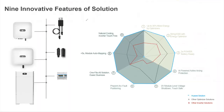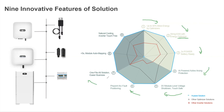As a review of all the things we discussed, we have nine main features: up to 40% more energy by using optimizers; the string energy storage system with optimizers; the two times the power battery-ready feature; artificial intelligence powered active arcing protection; zero volts module-level voltage shutdown; arc fault positioning pinpointing; one-fits-all solution for easier business; less than five seconds module auto mapping; and natural cooling with inverter touch-free maintenance.